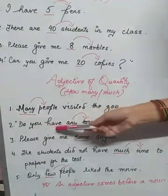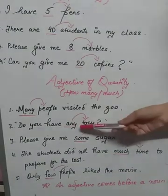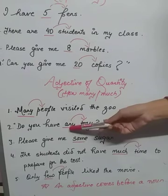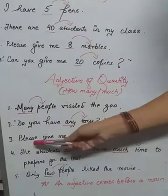Do you have any toys? They are asking you about the number of toys, so that is also adjective of quantity. Please give me some sugar — you need some sugar. How much sugar do you need? That 'some' is telling you the quantity. The students did not have much time to prepare for the test. Time is an uncountable noun, so 'much' is telling you how much time.